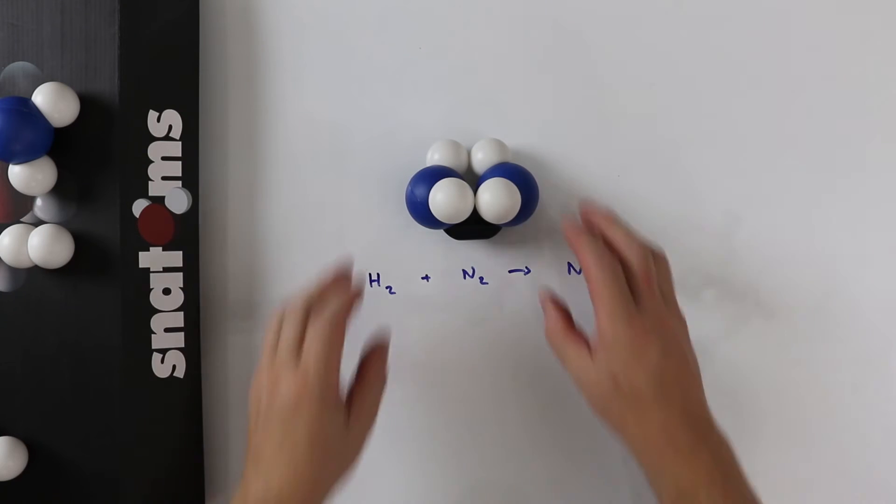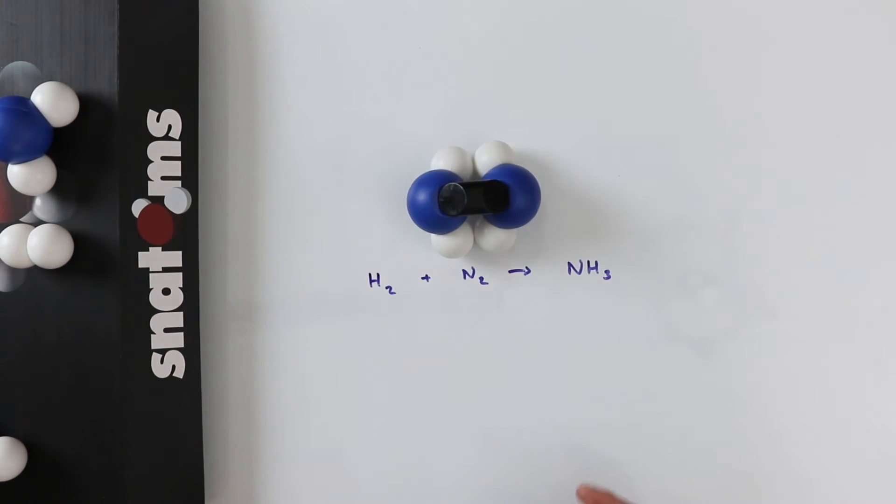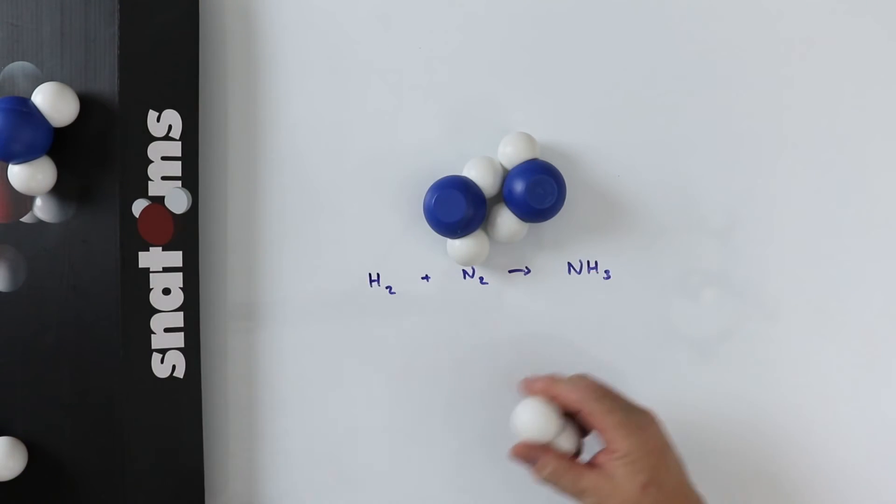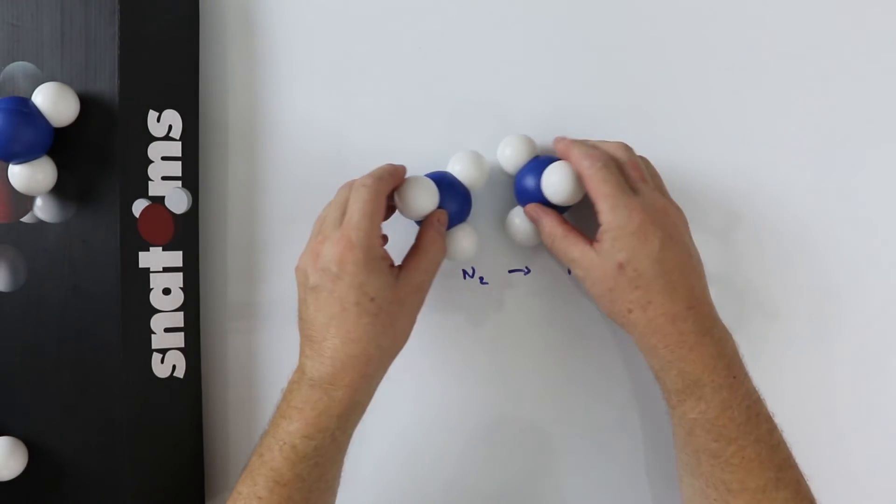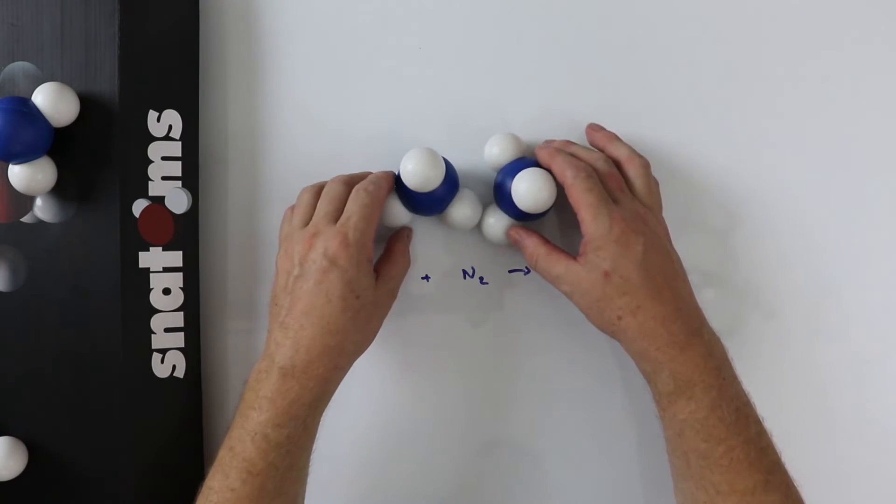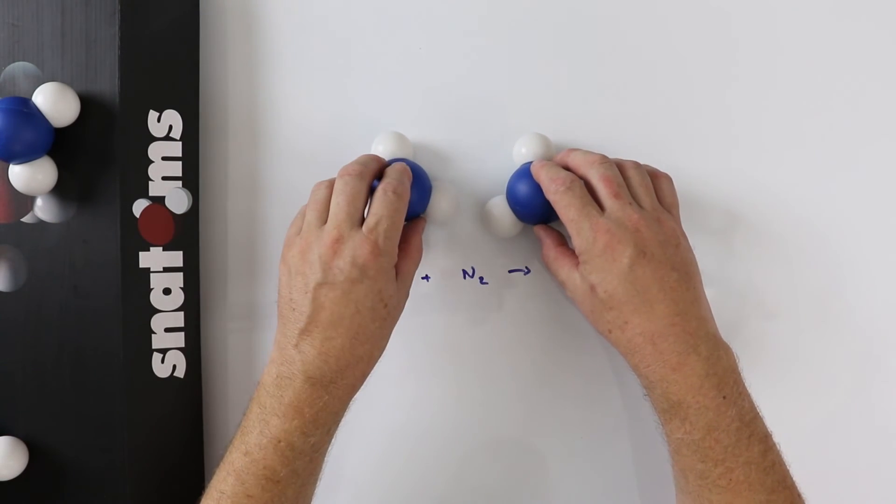There is still one more bond to break so we need another hydrogen molecule. Now all the nitrogen bonds have been broken and two ammonia molecules have been produced.